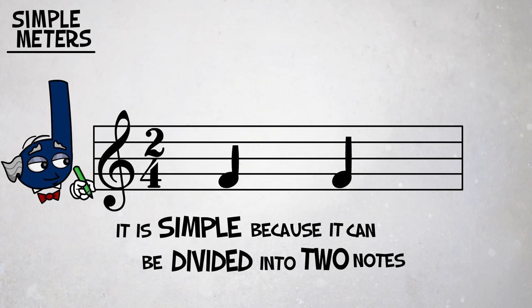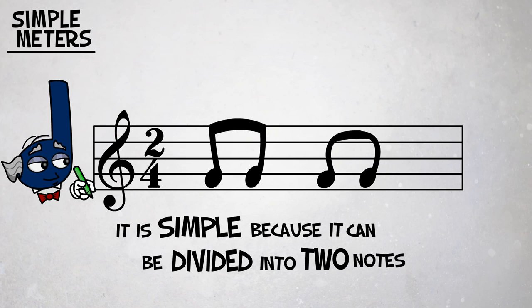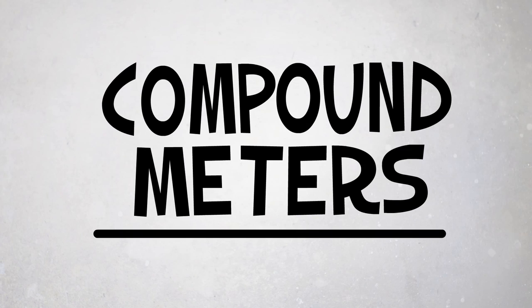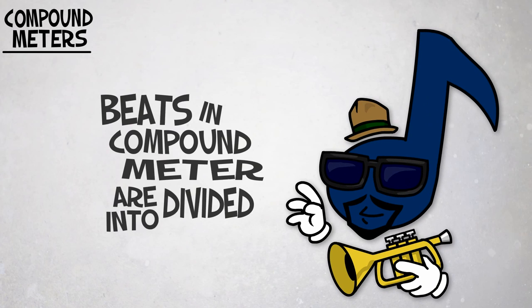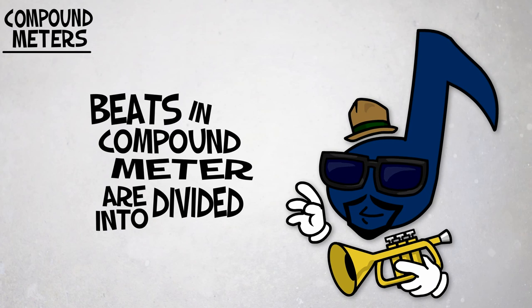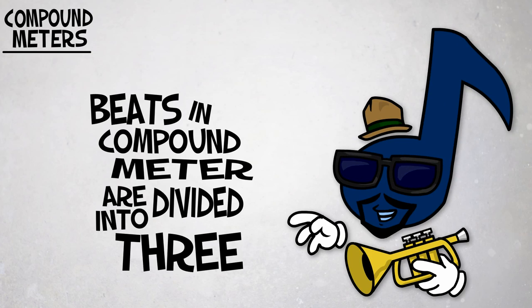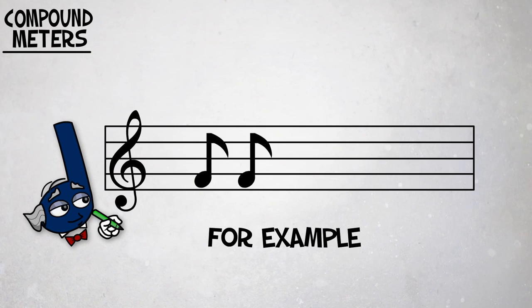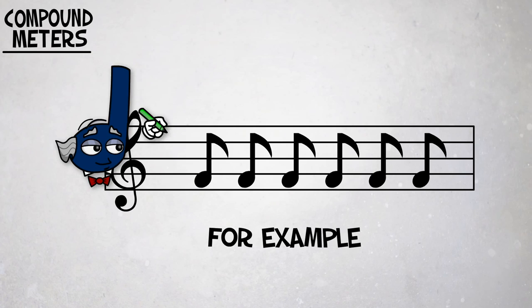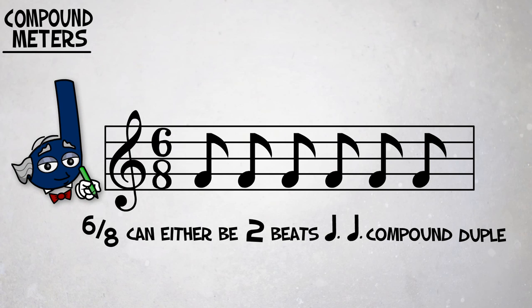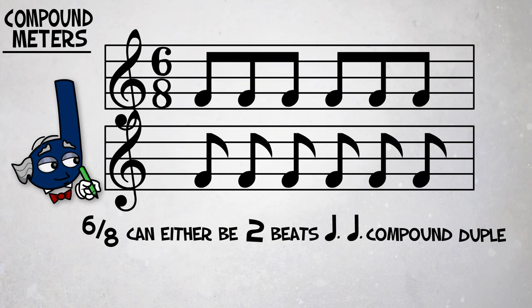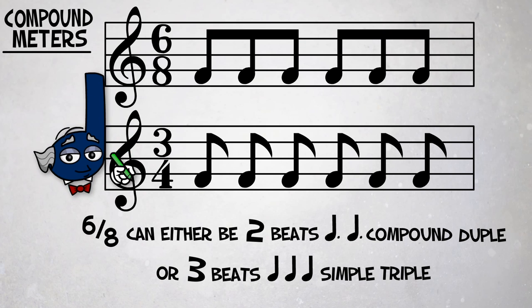It is simple because it can be divided into two notes. In compound meter, beats are divided into three. For example, six-eight can be either two beats — dotted quarter note compound duple — or three beats, which is simple triple.